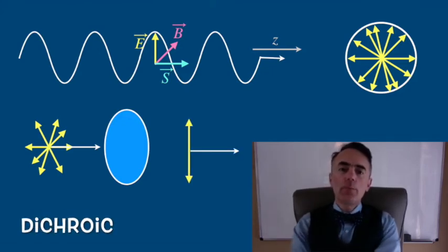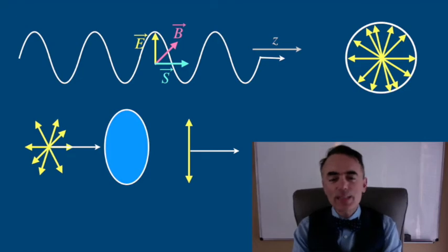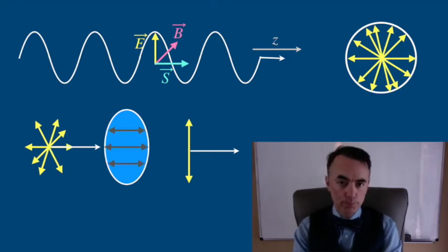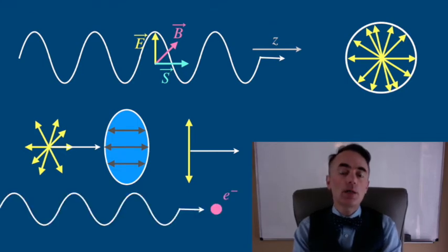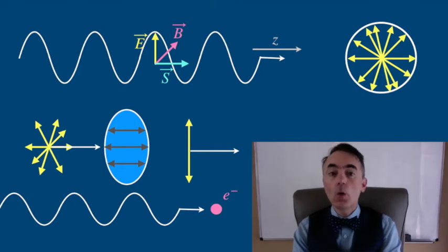A dichroic material absorbs selectively light of certain polarizations. We need to keep in mind that light is an electromagnetic oscillation and that oscillation interacts with electrons in the materials. That vibration of light can be transmitted or absorbed.